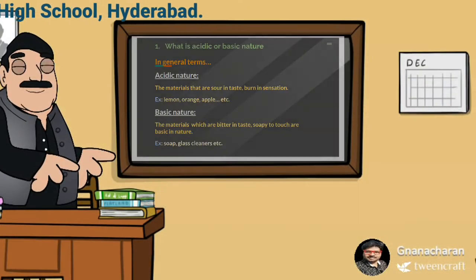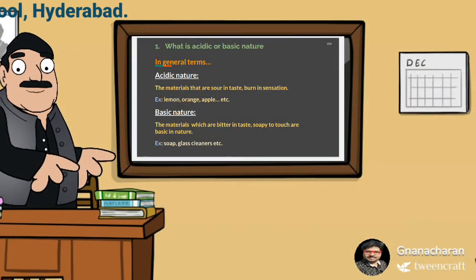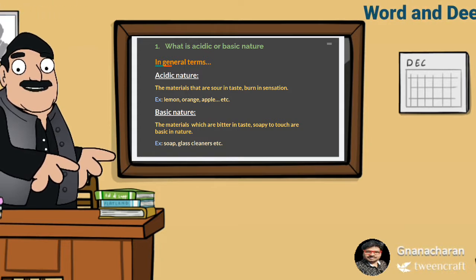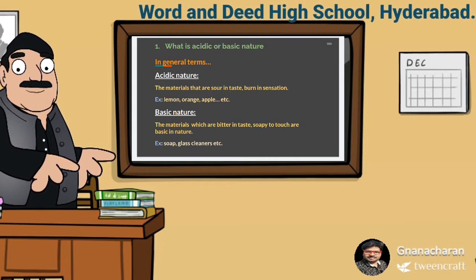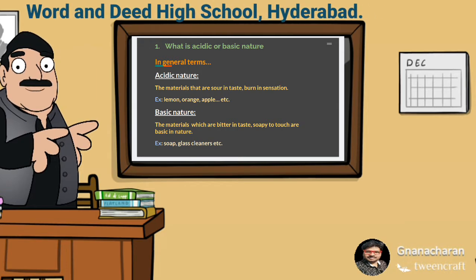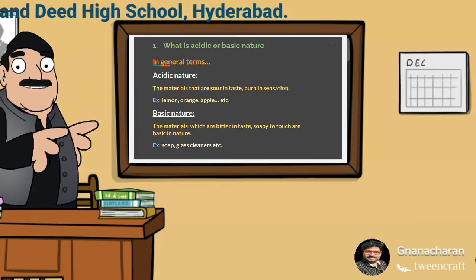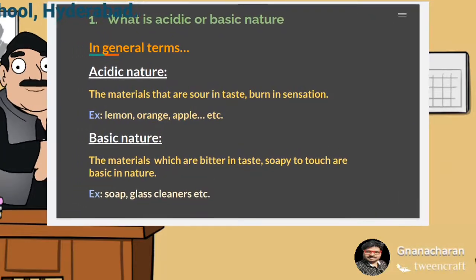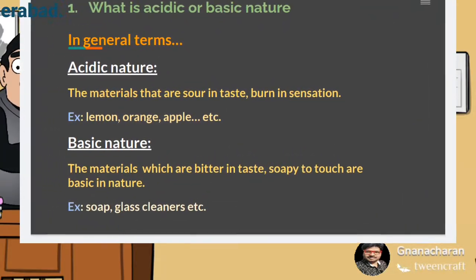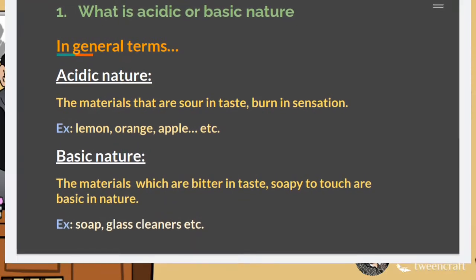First of all, let us know what is acidic or basic nature. In general terms, acidic nature means materials that are sour in taste and burn in sensation. For example, lemon, orange, apple, etc.